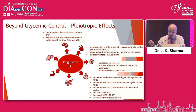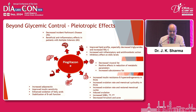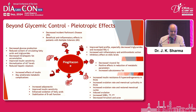In PCOS, there is increased subcutaneous fat reduction, improved insulin resistance and hyperandrogenemia, increased ovulation rate and menstrual cyclicity, induced ovulation, increased SHBG and free testosterone, and decreased hirsutism and acne. There is increased adiponectin, improved insulin sensitivity, enhanced oxidation of fatty acids, stabilization of beta cell function, decreased glucose production, reduced circulating fatty acids and triglycerides, decreased intra-hepatic fat accumulation, improved insulin sensitivity, normalization of ALT levels, and reduced hepatic steatosis.